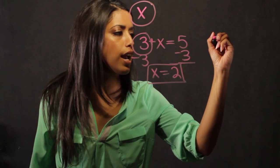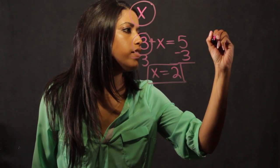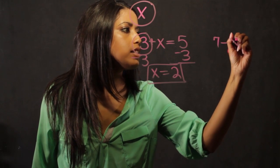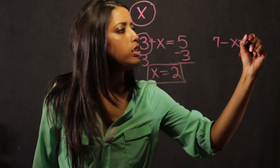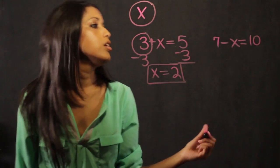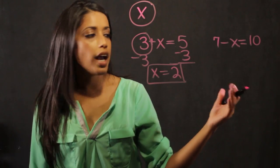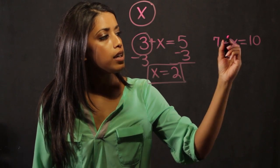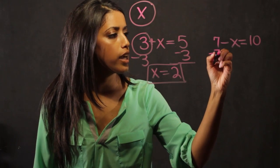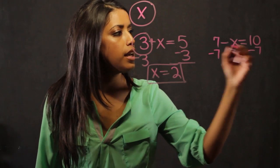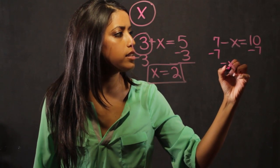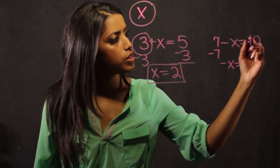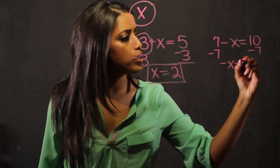Let's take 7 minus x is equal to 10. So what I want to do again is isolate my x variable by moving 7 over to the other side. So I subtract 7 from both sides, and I have minus x is equal to 10 minus 7, which is 3.